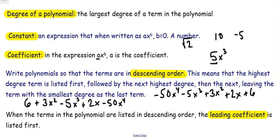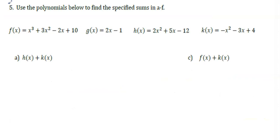All right, let's start adding polynomials. I want to show you two different strategies for organizing your polynomials when you add them. So in number 5 here, I'm going to add h(x) + k(x). So h(x) is right here, and then here's k(x). So we're going to add those two polynomials.